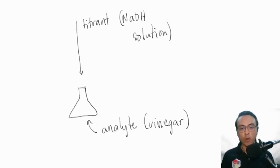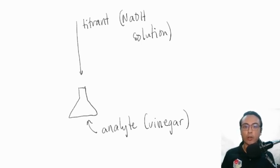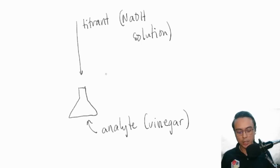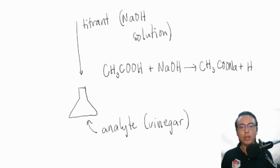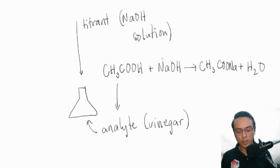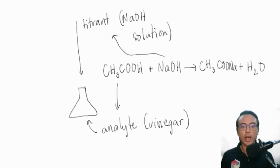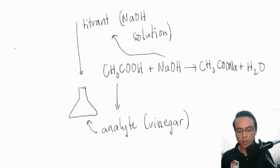The main reaction involved is the acid-base reaction between acetic acid and sodium hydroxide in your titrant. The acetic acid with formula CH₃COOH reacts with sodium hydroxide to produce sodium acetate and water. The acetic acid is in your analyte and the sodium hydroxide is your titrant, so we have a titrant solution of known sodium hydroxide concentration.